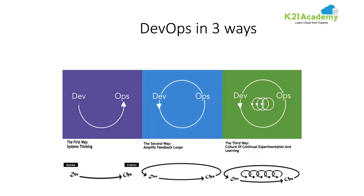Will there be any problem? Before writing the code you should always think about the system and write accordingly. Operations should also think: there is a new requirement to use Java 12 whereas the current production system is running on Java 8 — is it okay to upgrade, and if so, will there be any issues arising? Both operations and dev have to think from the systems perspective. That is the first way.